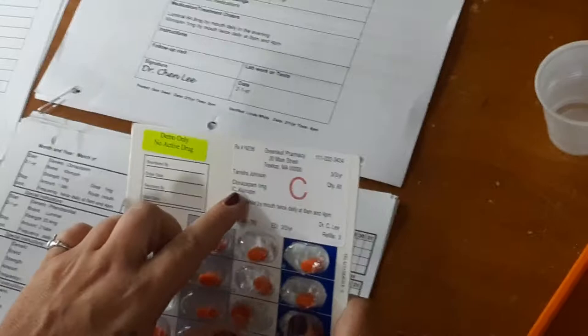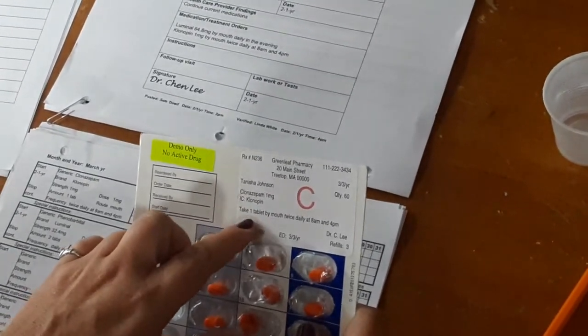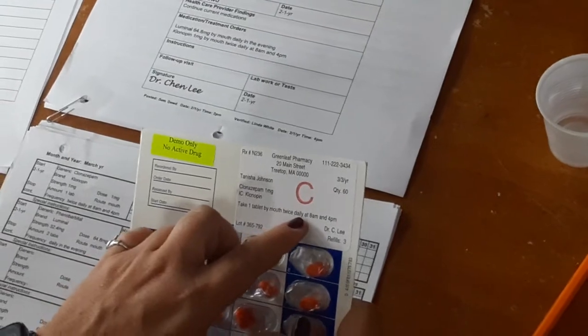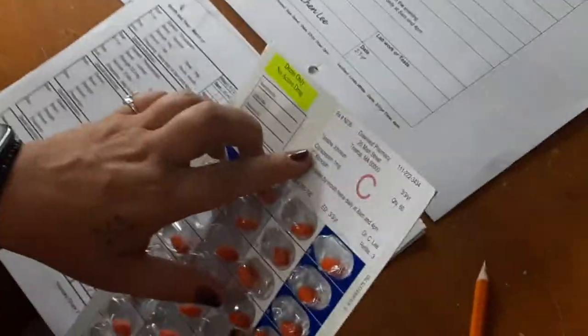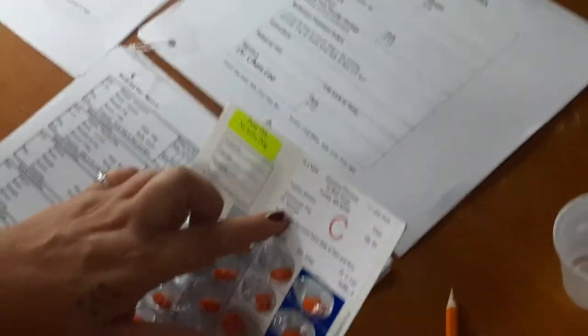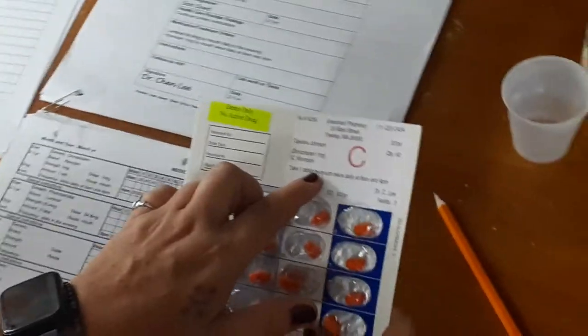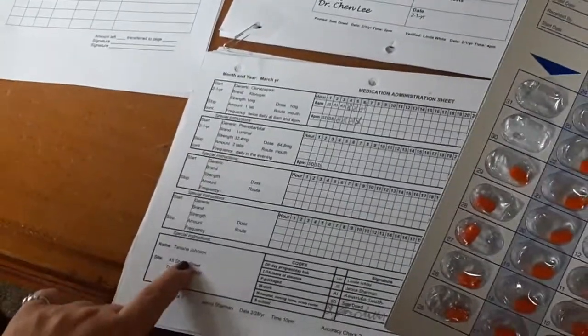On the pharmacy label, Tanisha Johnson, clonazepam, 1 milligram, I see Klonopin. Take 1 tablet by mouth, twice daily, at 8 a.m. and 4 p.m.